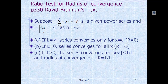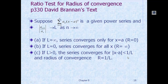Three possibilities can happen. If L equals infinity, the series converges only when x equals a — the radius of convergence is 0. If L equals 0, the series converges for any x — the radius of convergence is infinity. For case C, if L is a finite number greater than 0, then the series converges for |x - a| less than 1/L, and the radius of convergence R equals 1/L.